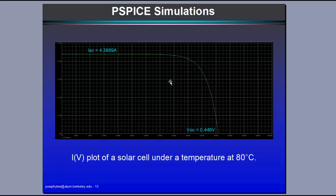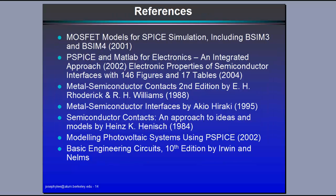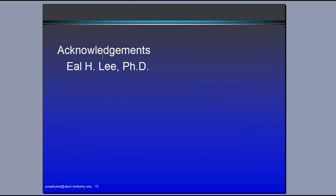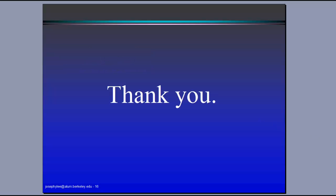When you run this P-SPICE simulation, with a short circuit condition the current is 4.3867 amperes, and with an open circuit condition the open circuit voltage VOC is 0.446 volts. This is what short circuit current and open circuit voltage mean in P-SPICE. Here is the diagram of the simulation, and here are my references. My father, Dr. Ilham Lee, helped me with this presentation. That concludes my presentation. Thank you.